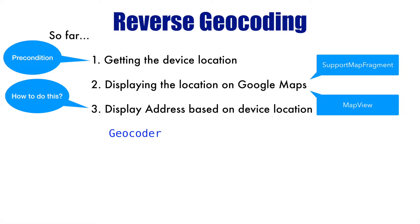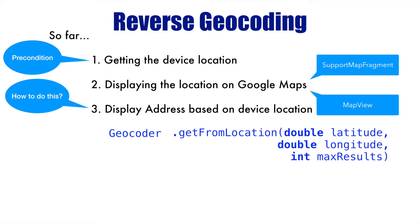The Geocoder API has a method called getFromLocation. As you would expect, it takes three arguments: latitude, longitude, and max results. Latitude and longitude are pretty obvious — you can fetch them from the location obtained in the earlier step. The max results parameter tells the method how many addresses you want in the response.